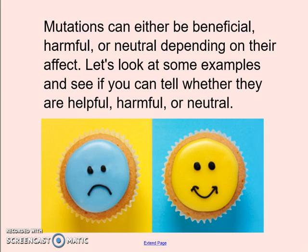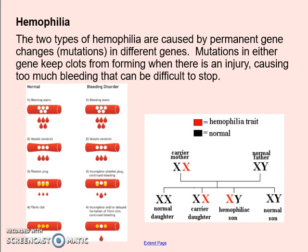Mutations, depending on what they are, whether you're an animal or a human, can be either beneficial, harmful, or neutral depending on their effect. The first example is hemophilia — this is a disease that prevents people from forming clots when they have an injury, so basically they can bleed to death. That's something that's going to be harmful to their host because they've got the potential to possibly bleed to death. So that would be an example of a harmful mutation.